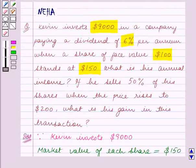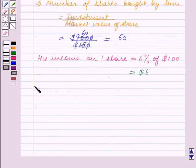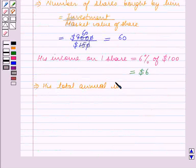Now we have to calculate his annual income. His total annual income is equal to the income per share multiplied by the number of shares. The number of shares bought by him is 60, so his total annual income is $6 multiplied by 60, which equals $360.